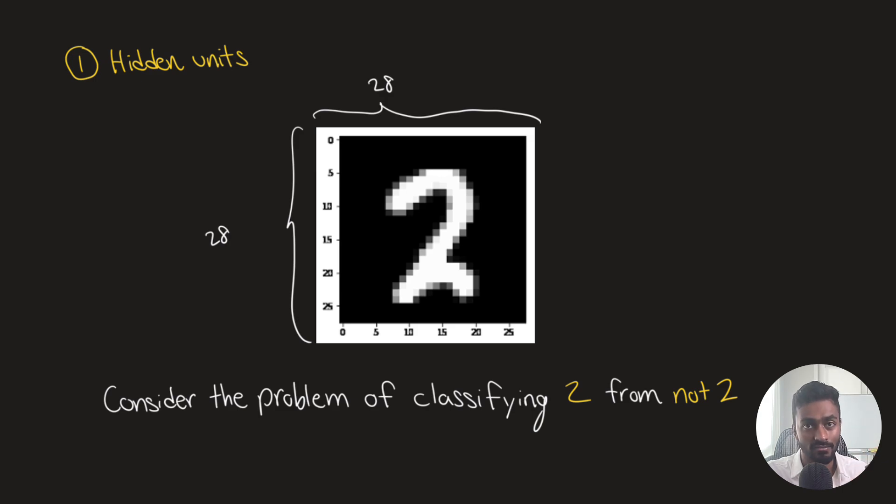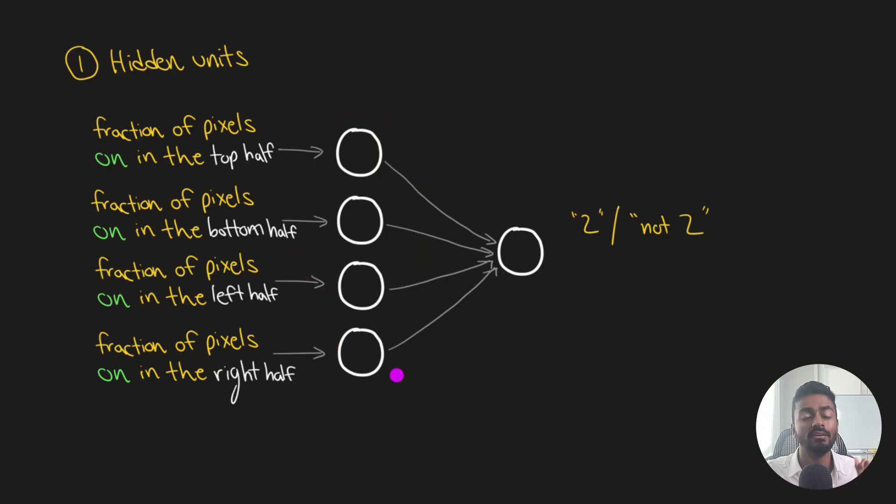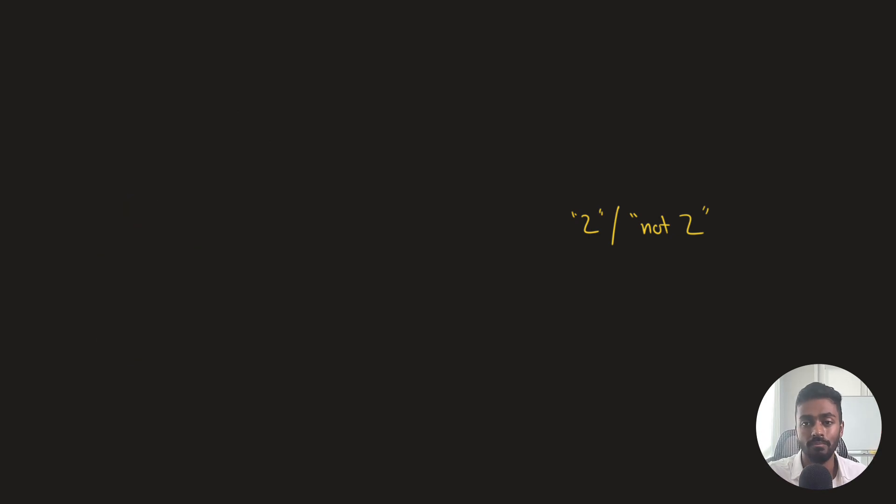So our perceptron architecture can actually work really well if we have very good handcrafted features. So for example, let's say that we are trying to build a pattern recognizer to recognize a two digit from a non two digit, where the input could be like some input 28 by 28 image of a two. Now, what we can do is if we just have four features, we can handcraft these four features. Let's say one of them could be fraction of pixels that are on on the top half of the image, the fraction of pixels that are on on the bottom half of the image, that on the left half, and then on the right half. These could be plausible features to recognize a two from not a two. And assuming that these are good features, then the perceptron can actually work pretty well.